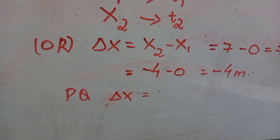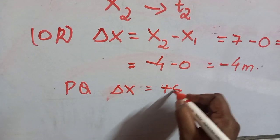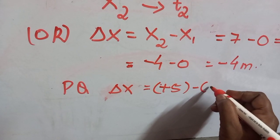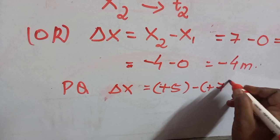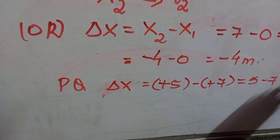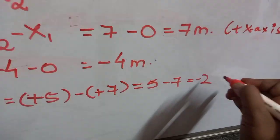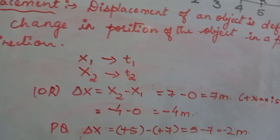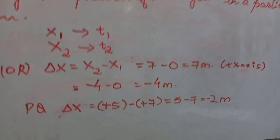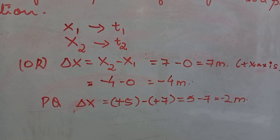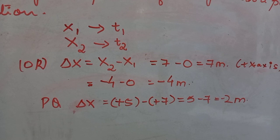For P to Q: Δx = x₂ − x₁ = +5 − (+7) = −2 meters. These examples from the number line indicate the motion of a body along a straight line.